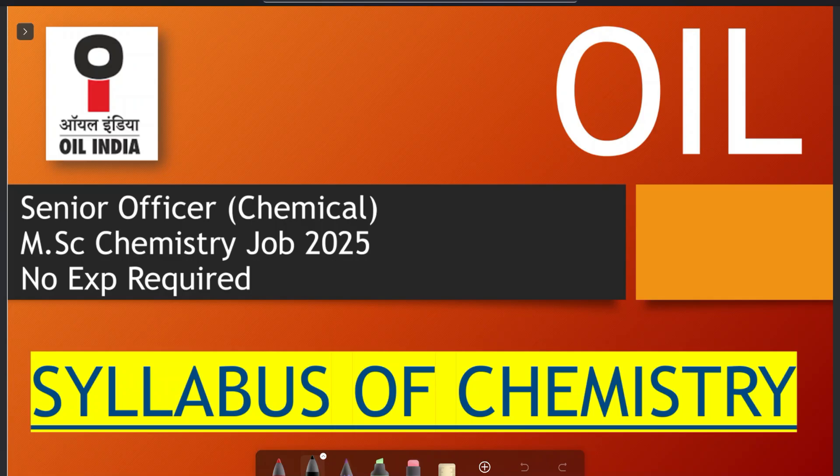First, I will tell you, this OIL senior officer chemical exam, first November, that means first week of November 2025 is scheduled, and 26 September is the last date. Full detailed advertisement video, you will see, so you will understand all the information.